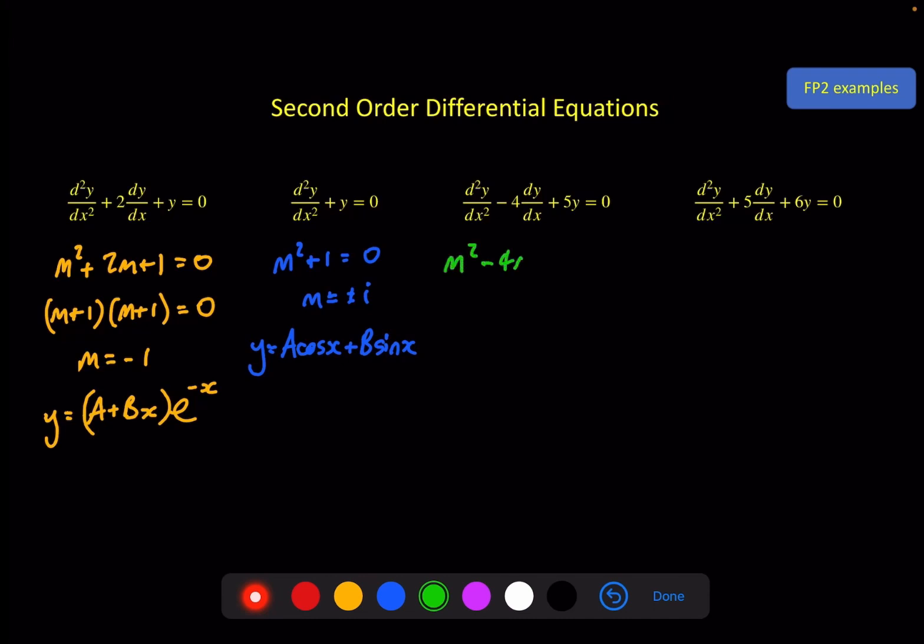Here m² - 4m + 5, this is another complex solution, m is equal to 2 ± i, so we've got e^(2x)(A cos x + B sin x).